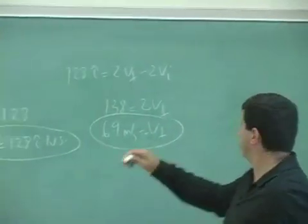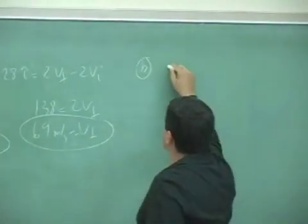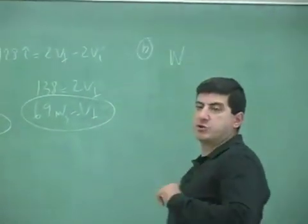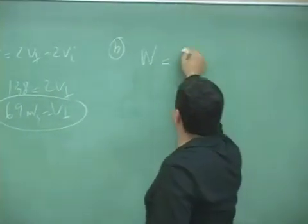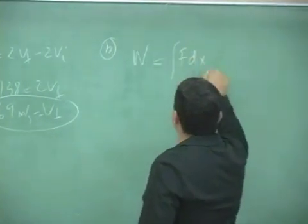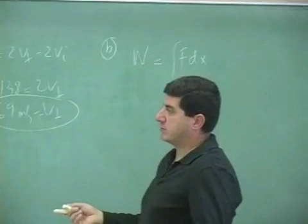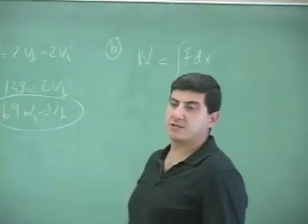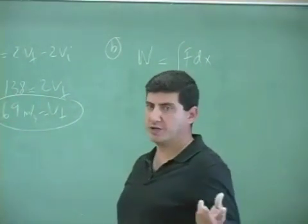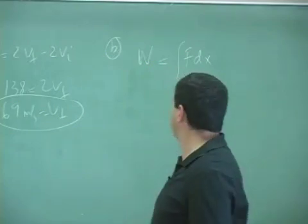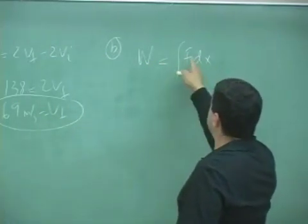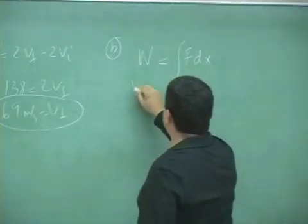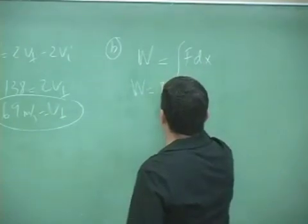Find the work done on the object. I don't have to do F dx. I don't know the distance that it went. I could find it if I want to. It's not that hard. But instead of doing the work this way, I can set the work equal to the change in kinetic energy.